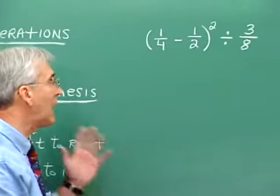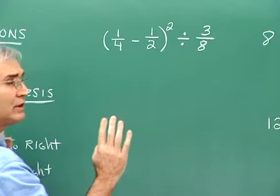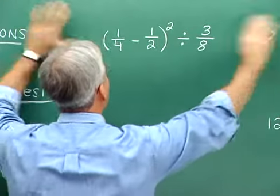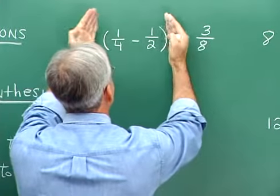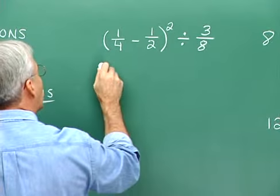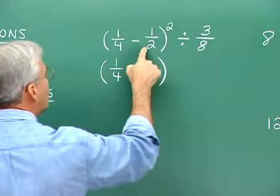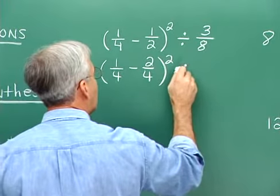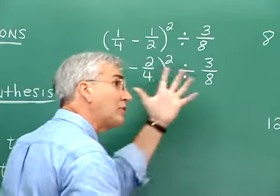Consider this problem — it involves several items from the order of operations agreement. The parentheses should draw you in first, ignoring everything else. Working inside the parentheses, we're collecting fractions and need a common denominator of 4. This gives us 1 fourth minus 2 fourths. Bring down all of the other items — we want each expression in succession to be equivalent to the one before. 1 fourth minus 2 fourths is 1 minus 2 over 4. We bring down the rest of the expression.